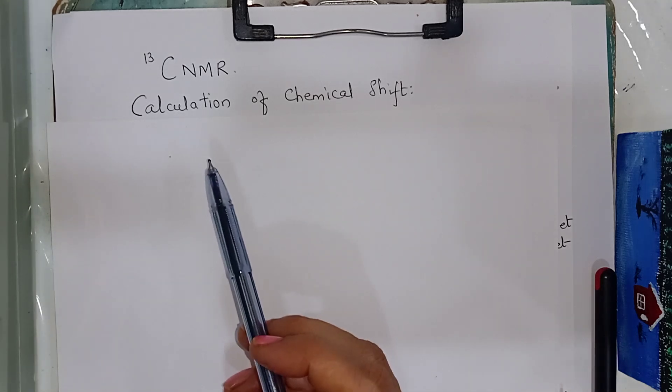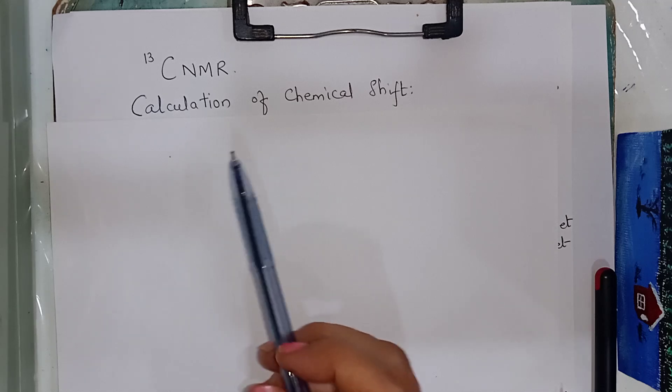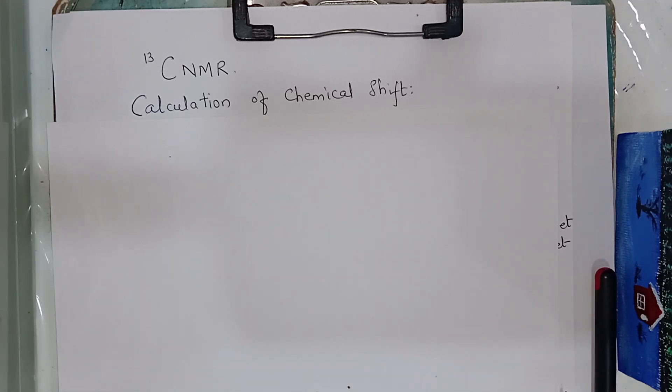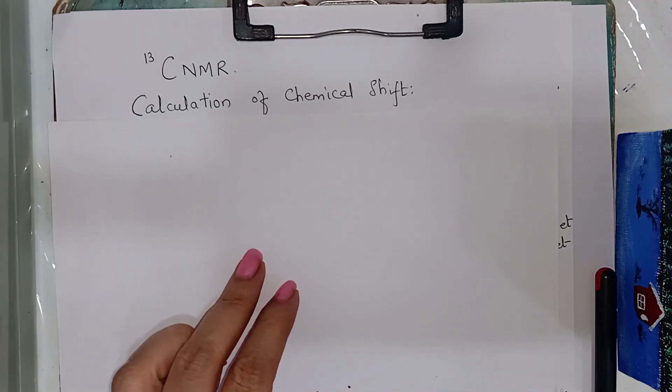Today, we will be doing for alkanes. Methane absorbs at minus 2.5 ppm. Normal range for alkanes is 0 to 60 ppm. The chemical shift.